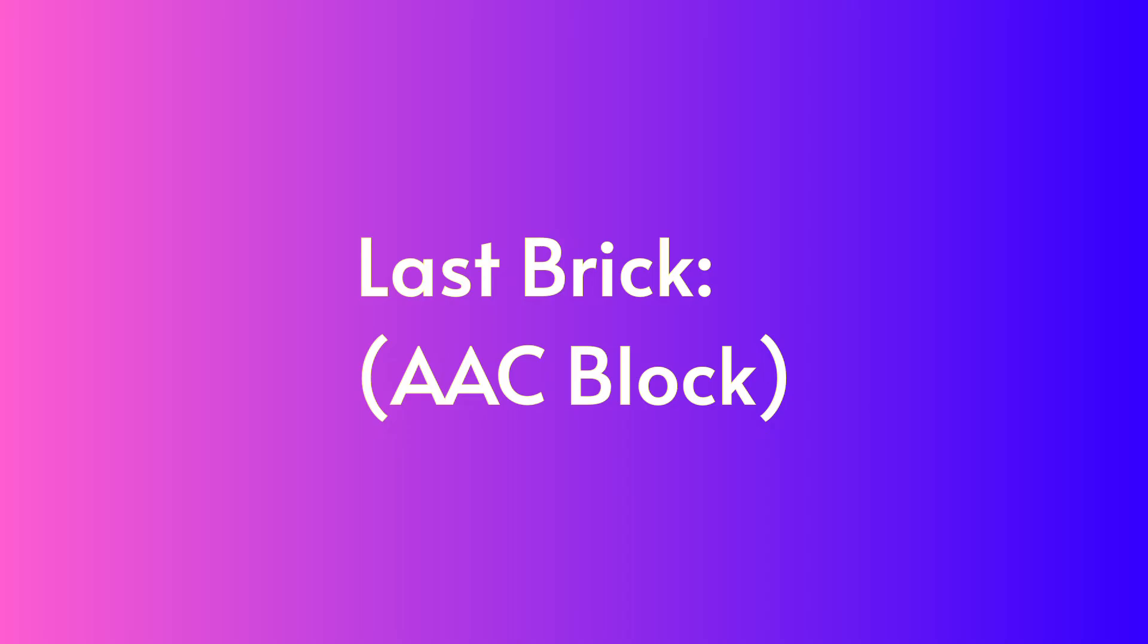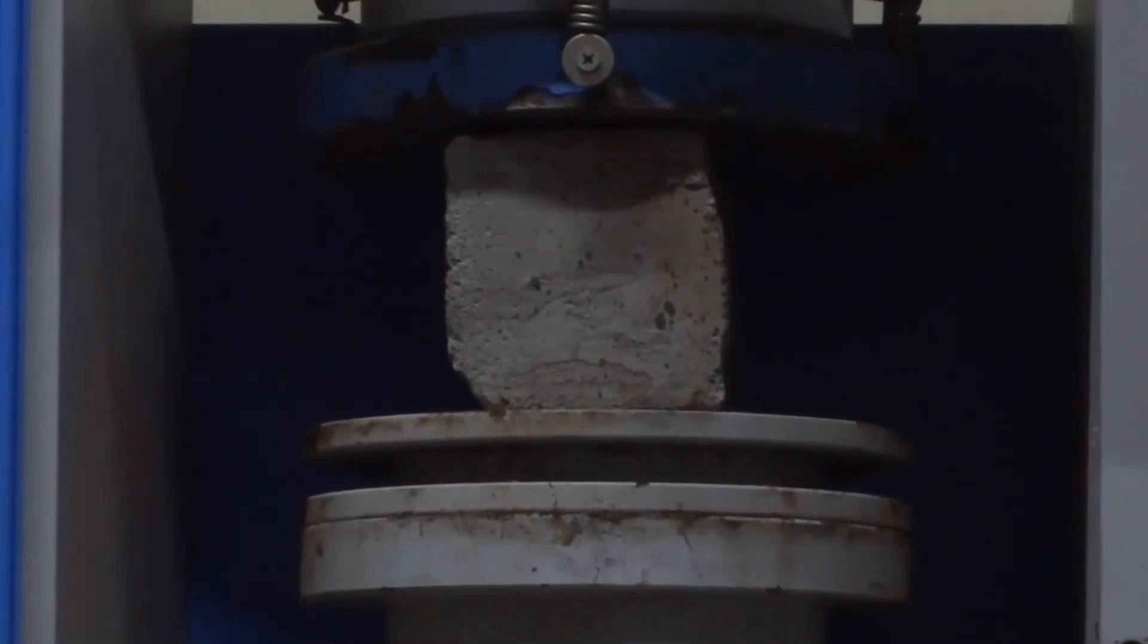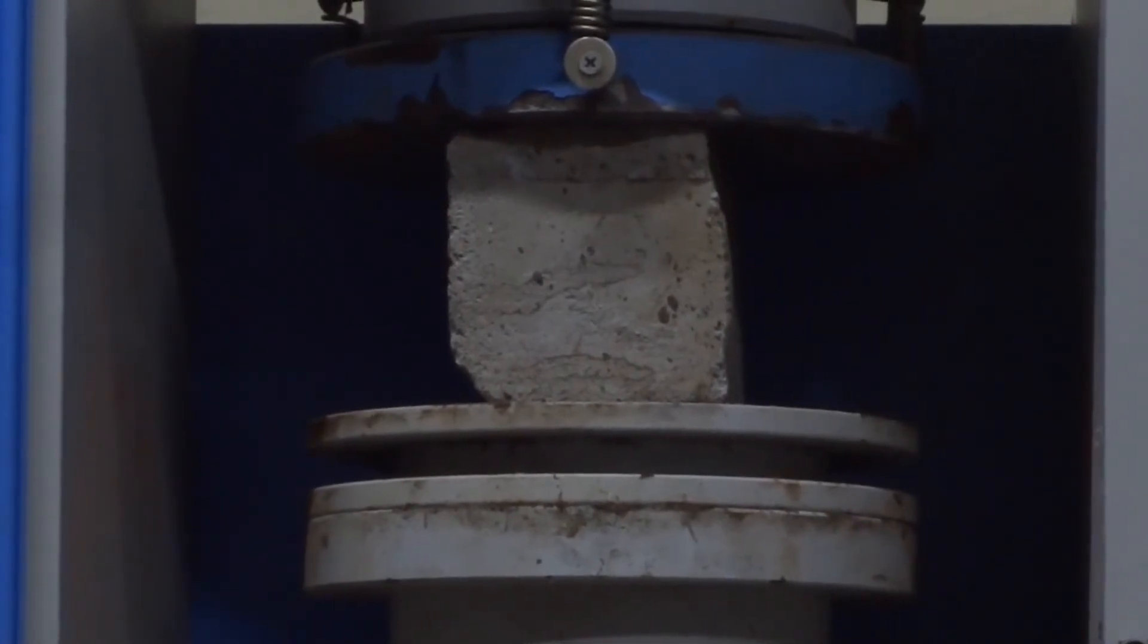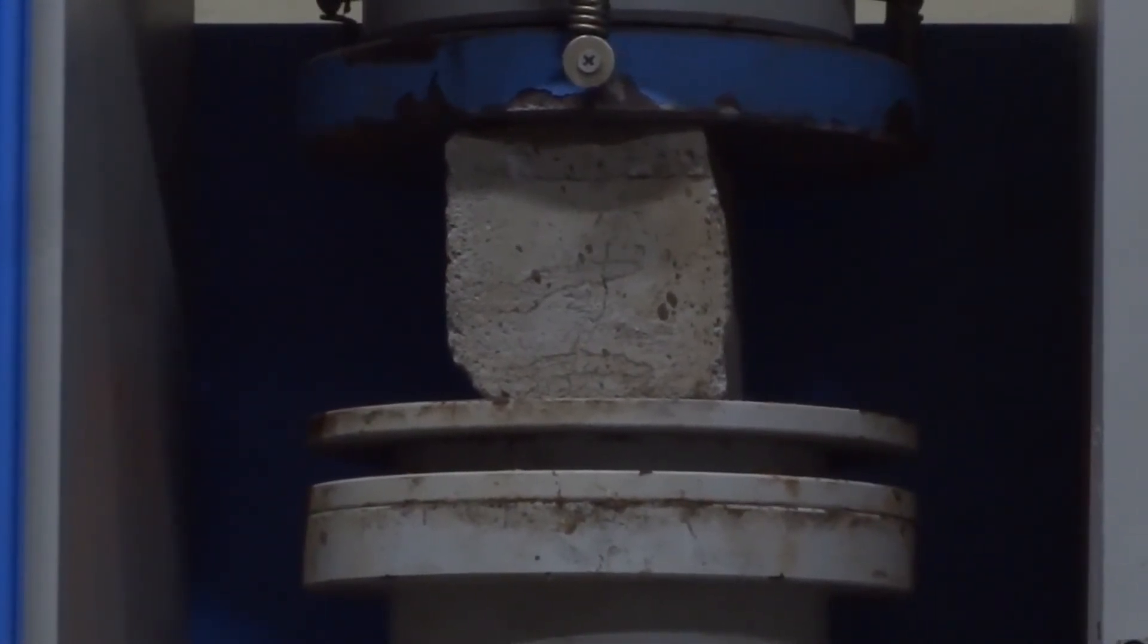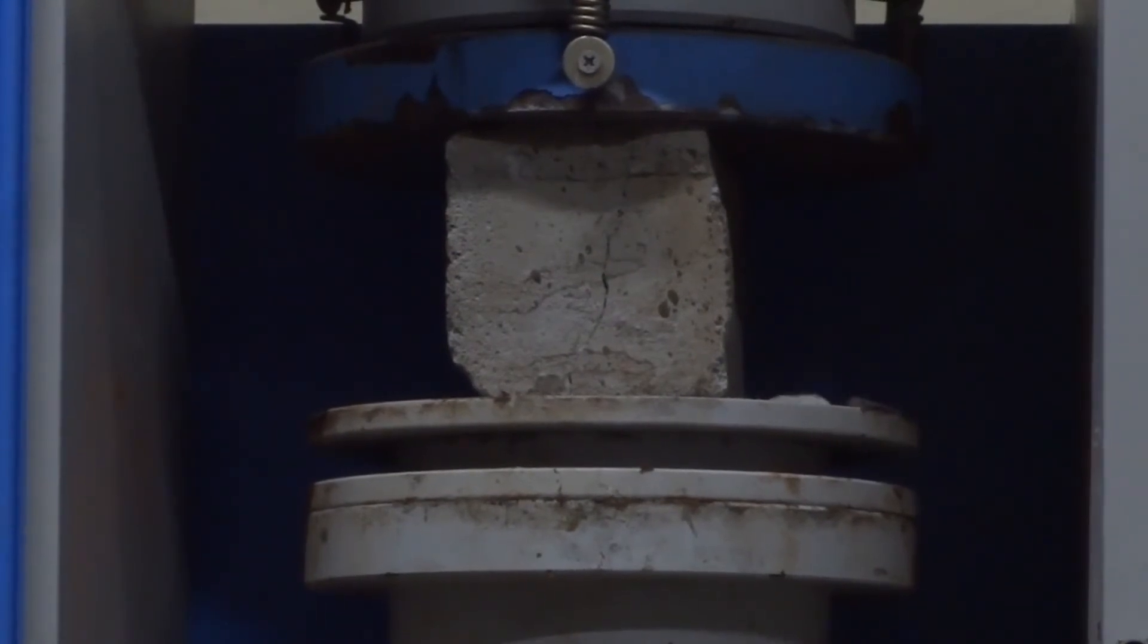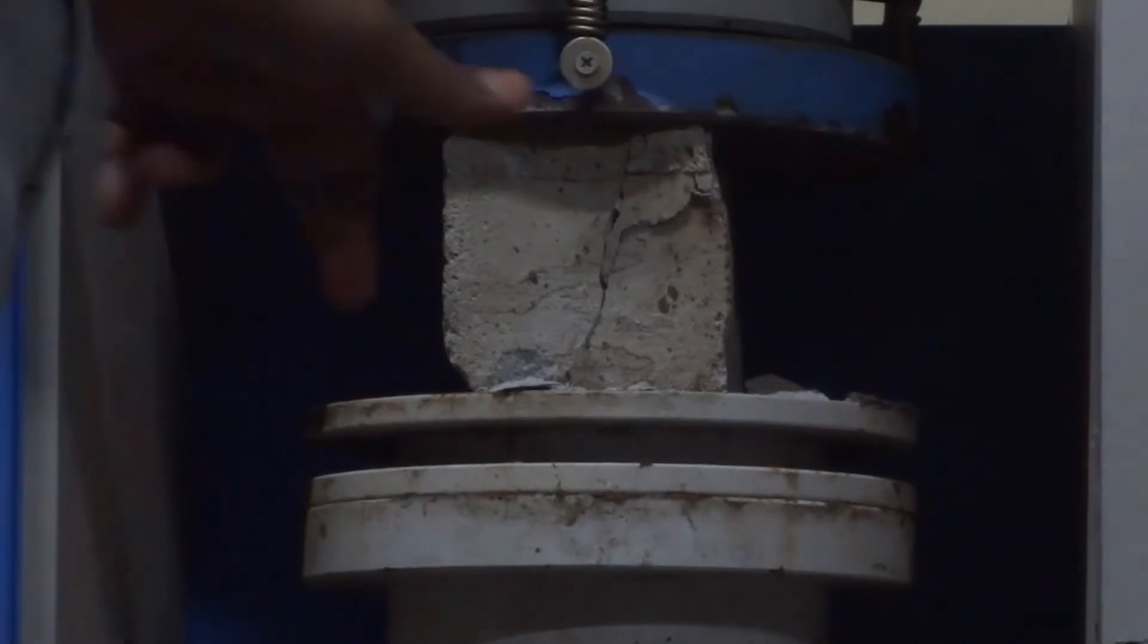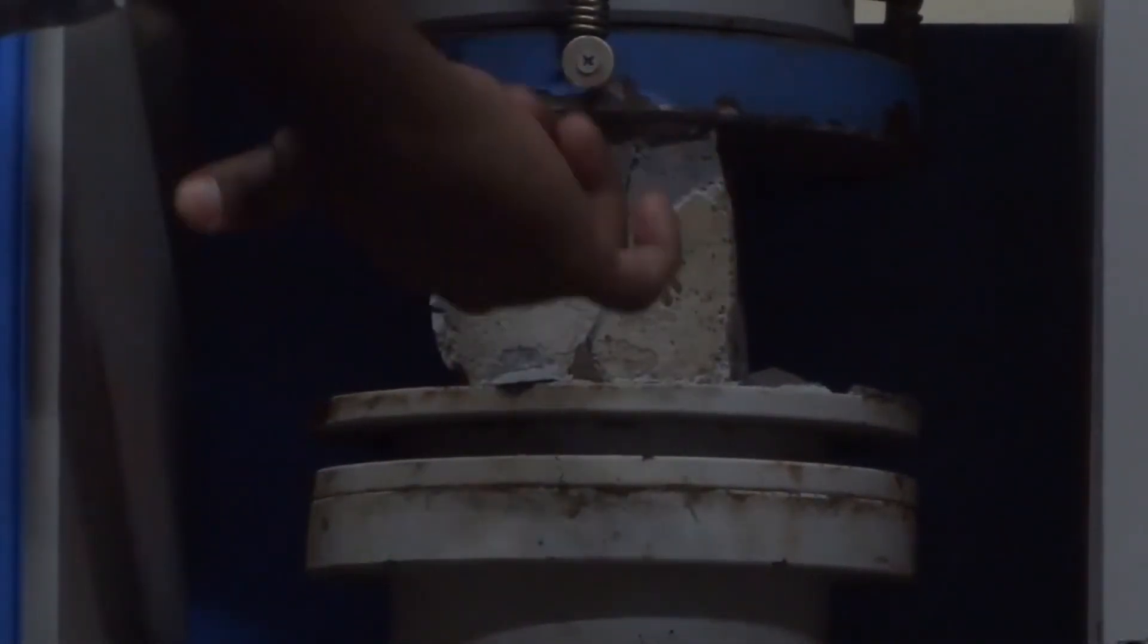Our last brick in the line is the AAC block where AAC stands for autoclaved aerated concrete. The weight of the block used in this compression test was 745 grams. This block broke at 40kN of total load.